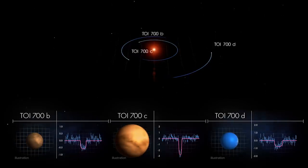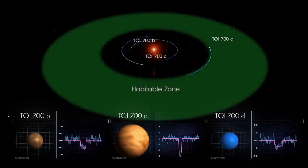But most importantly, TOI-700d is within the star's habitable zone.